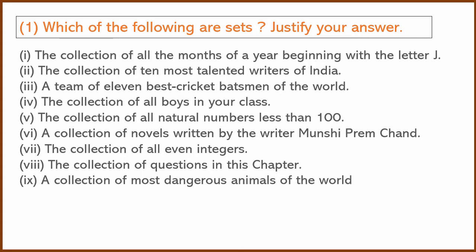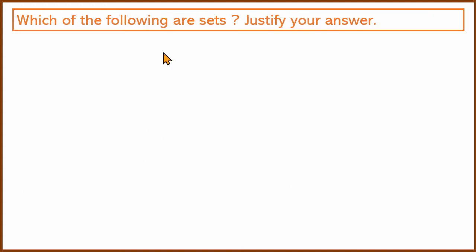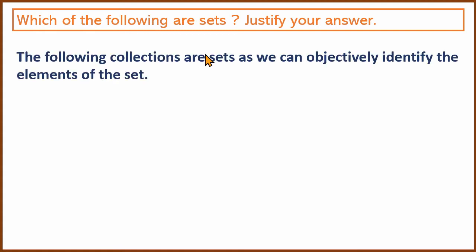First question: which of the following are sets? Justify your answer. There are nine collections and we have to find out which ones are sets. We should be objectively able to identify the elements of the set — it should not be subjective.